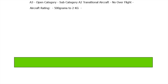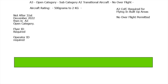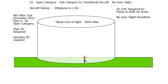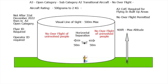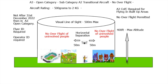This is subcategory A2 with an A2 Certificate of Competency. Again, 400 feet, 500 meters visual line of sight, and 50 meters horizontal separation from uninvolved people. No overflight of uninvolved people. You need your operator ID, flyer ID, and the A2 CofC to fly in a built-up area.